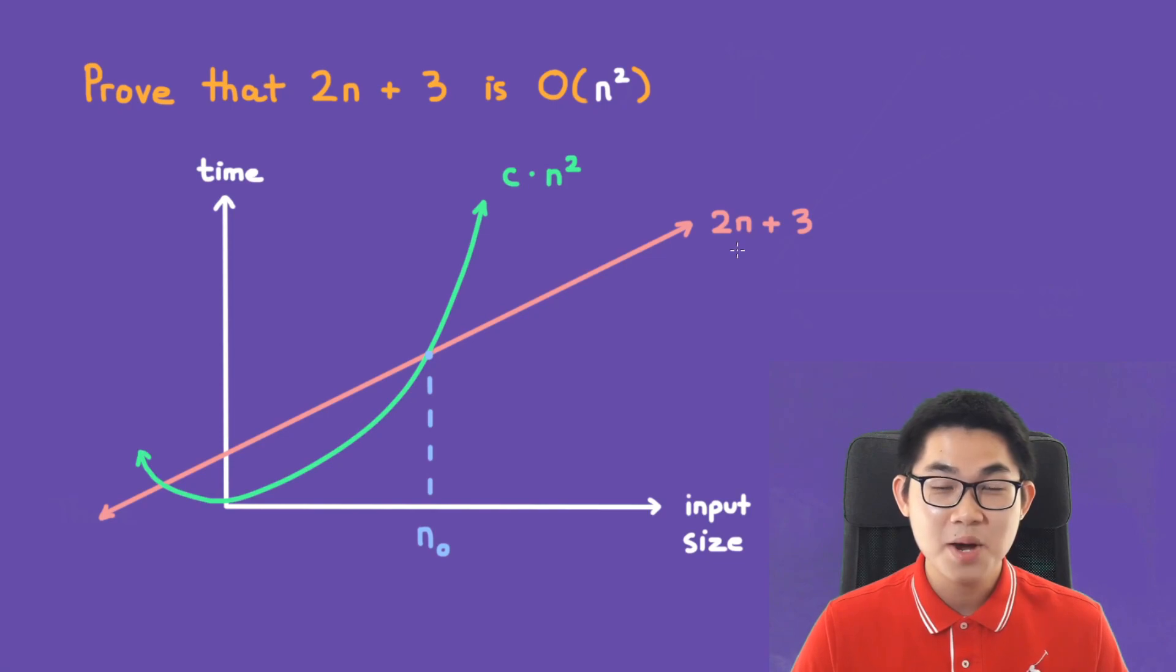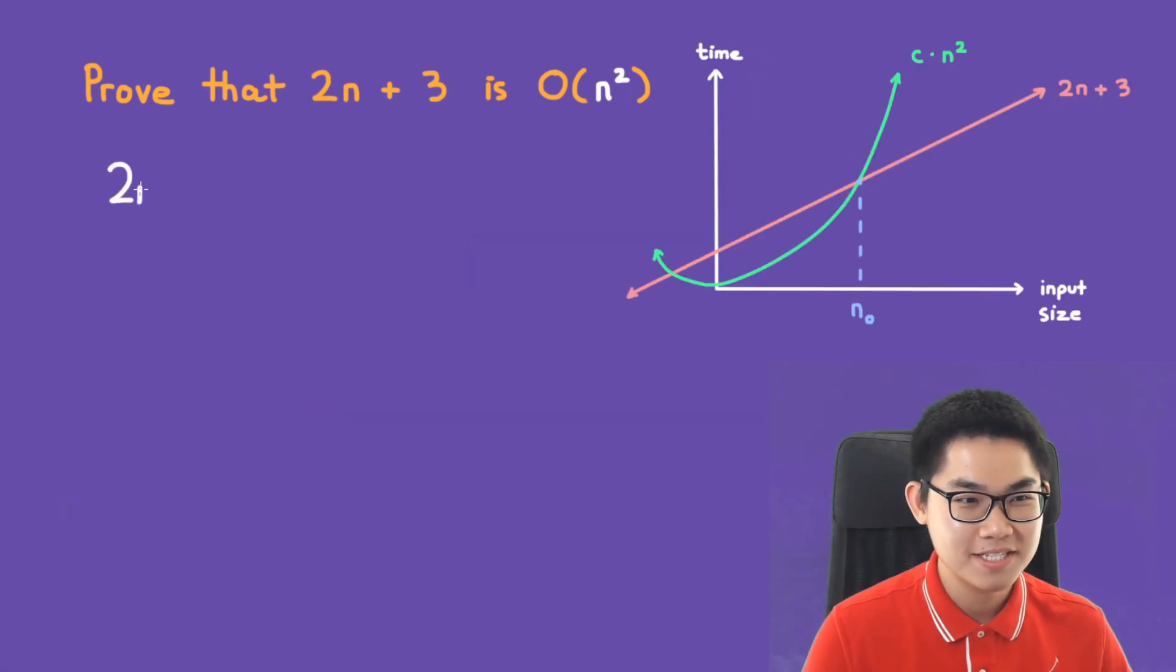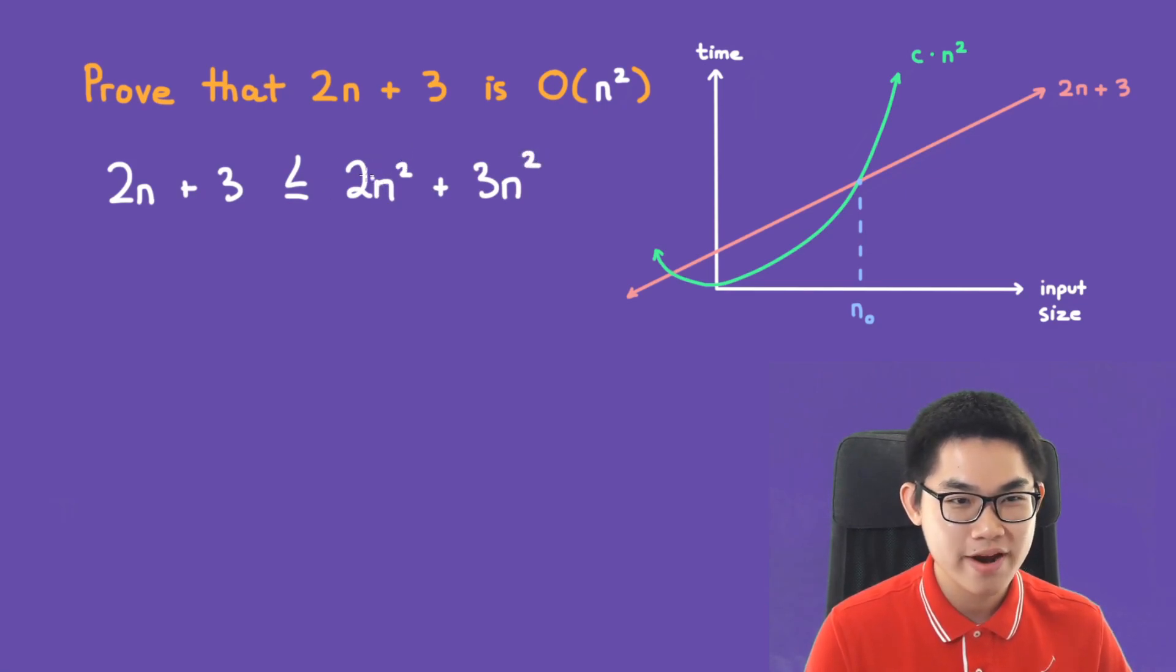So 2n plus 3 is less than or equal to 2n² plus 3n². And this makes sense because 2n² is larger than 2n and 3n² is larger than 3. So we have 2n plus 3 is less than or equal to 5 times n².